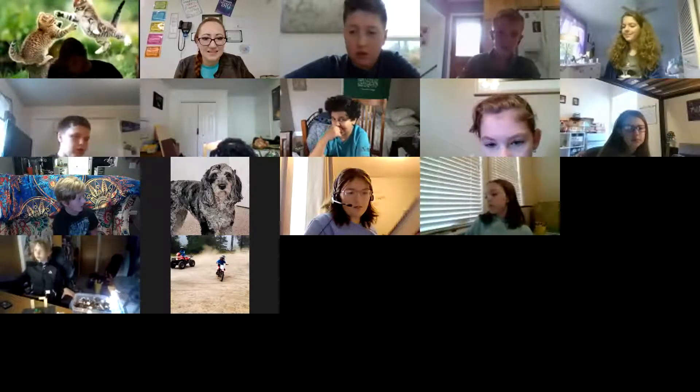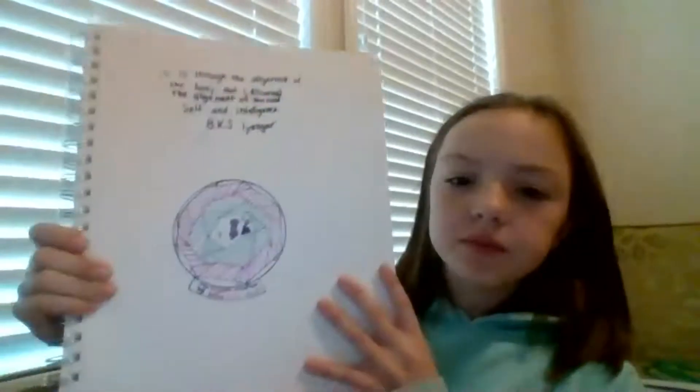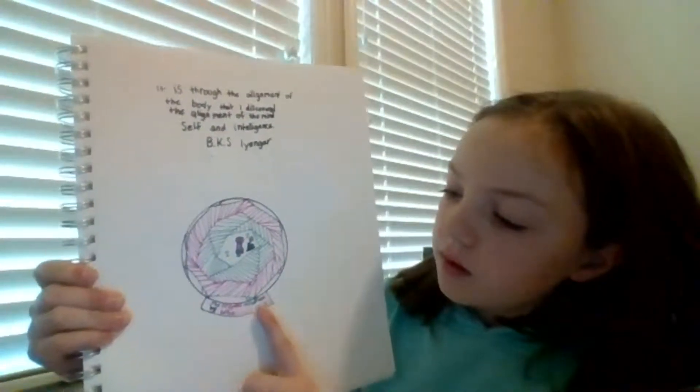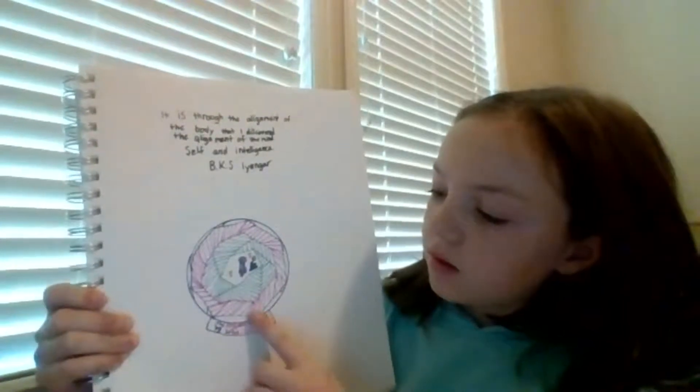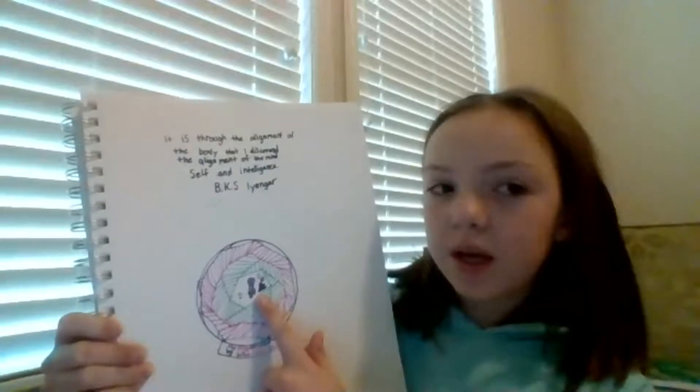Next up is going to be Sophia. I did a snow globe and my quote says 'it is through the alignment of the body that I discovered the alignment of the mind, self, and intelligence.' I drew a snow globe with line, shape, value, and color. Inside is two smiley faces, a dream catcher, and a person. That is awesome, Sophia. Great job.